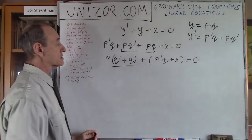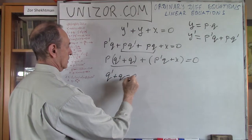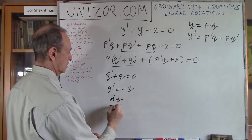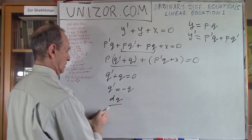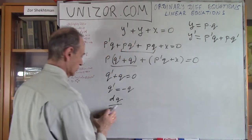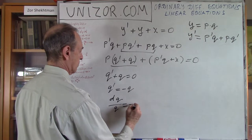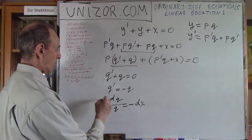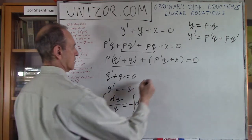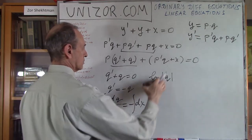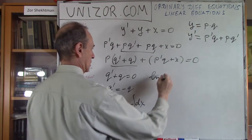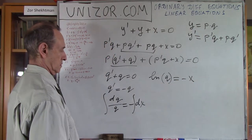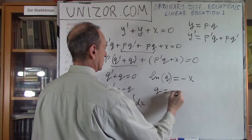First let's find what brings q' + q to zero. So dq/dx = -q, which gives dq/q = -dx. I can integrate both parts: the left gives logarithm of q, which equals minus x. From which q is equal to e to the power of minus x.